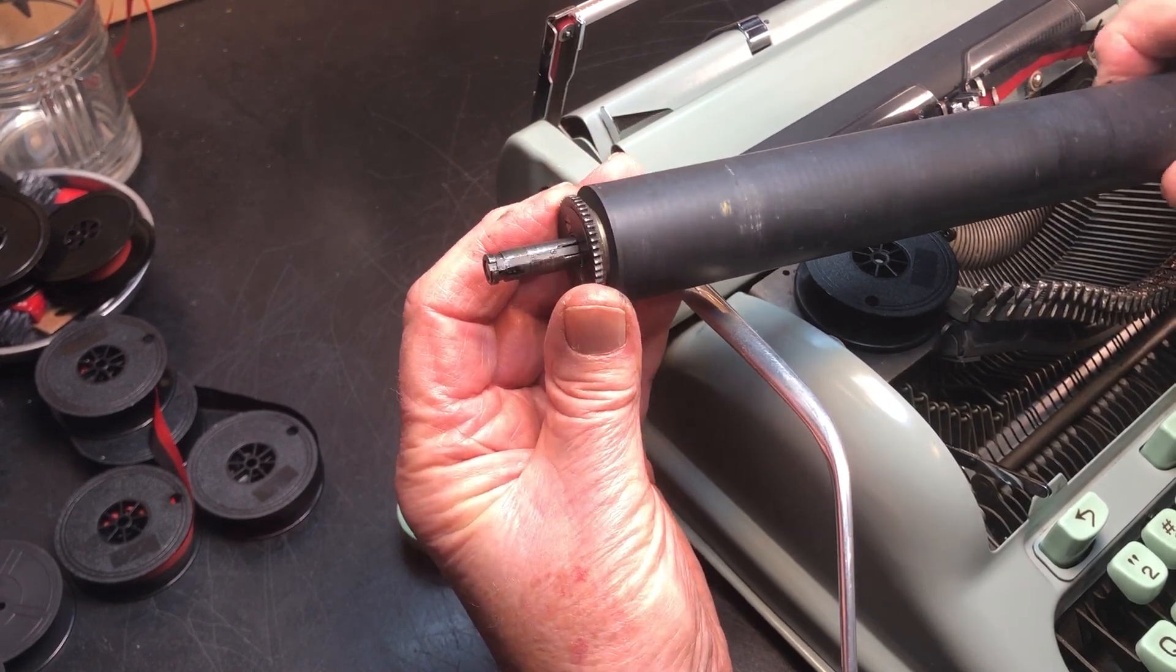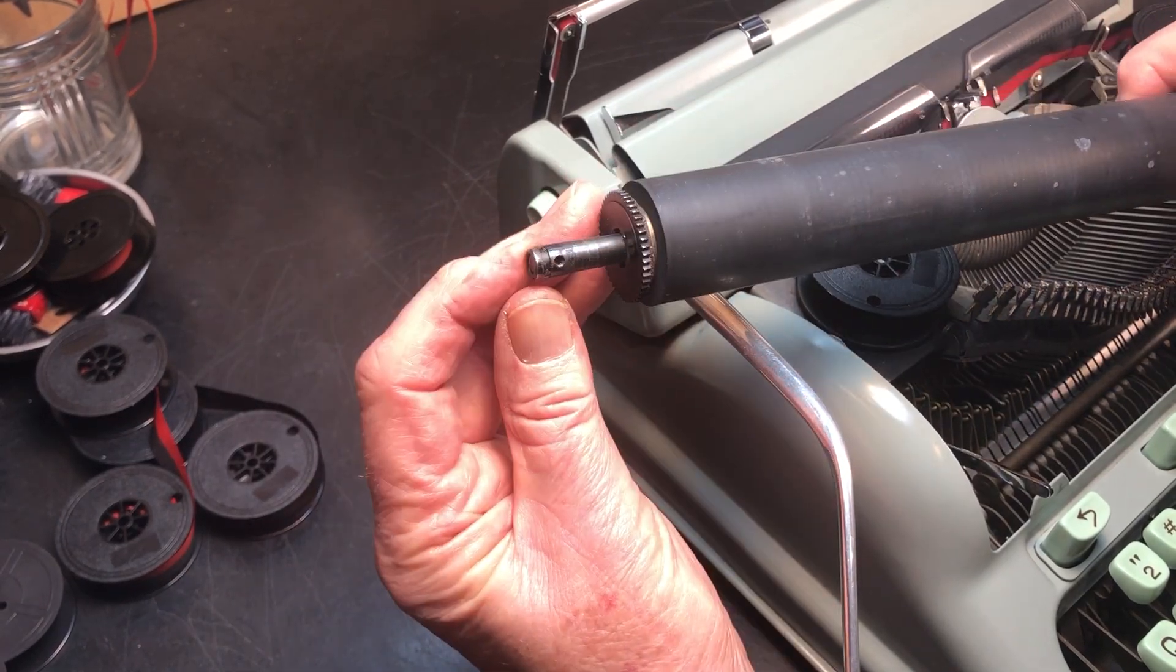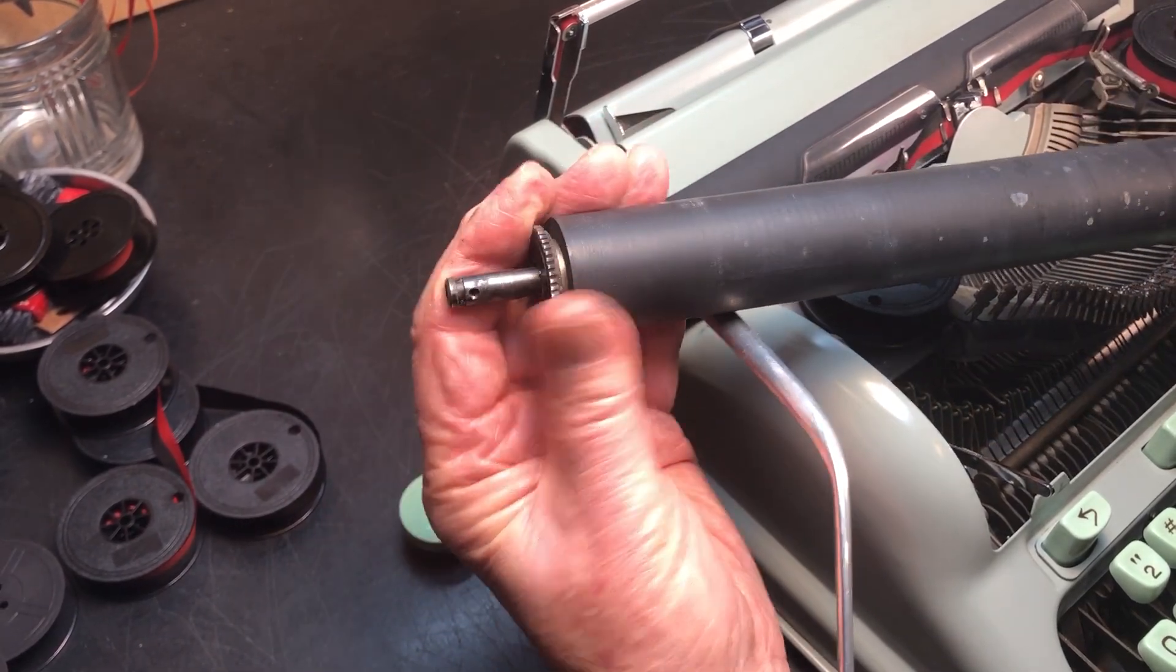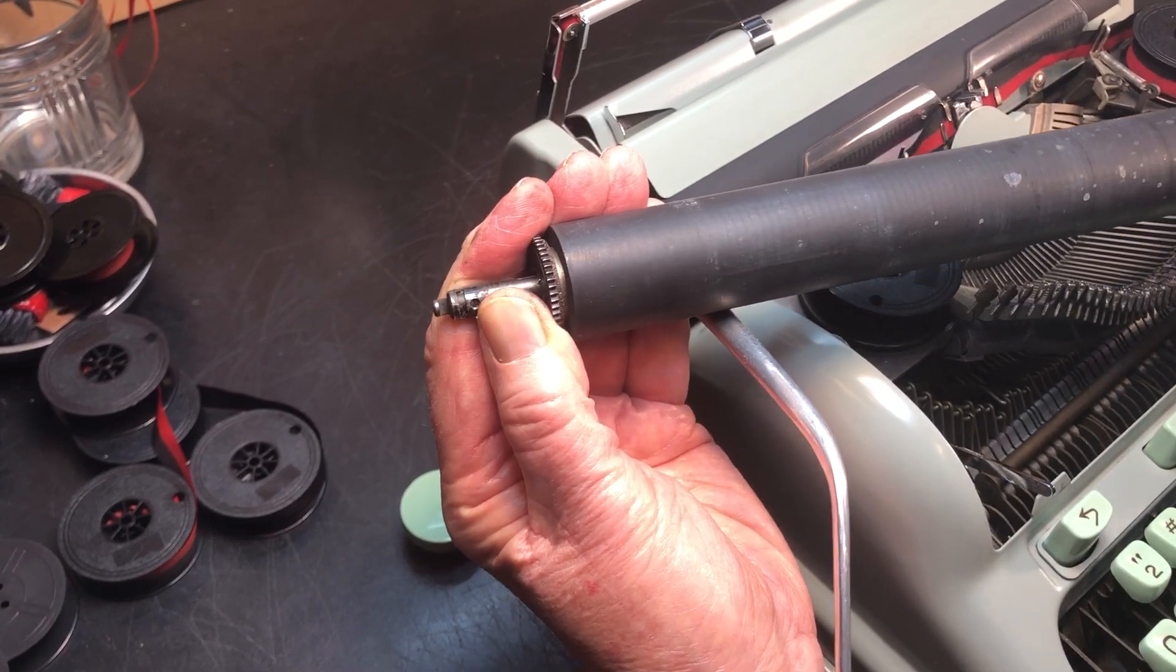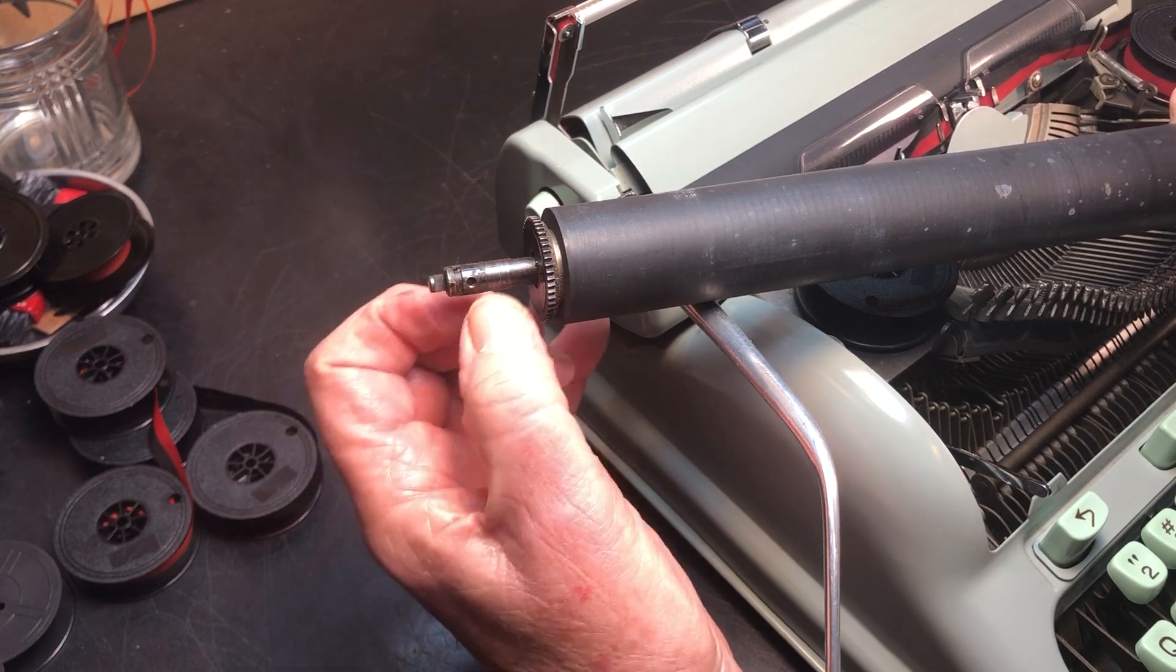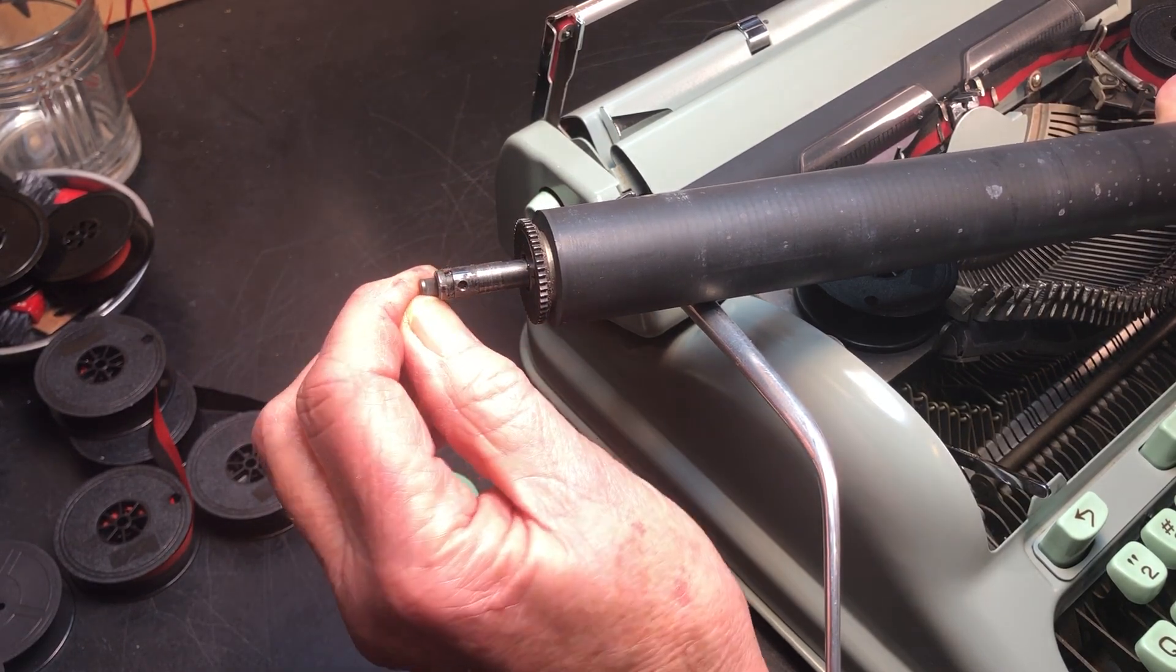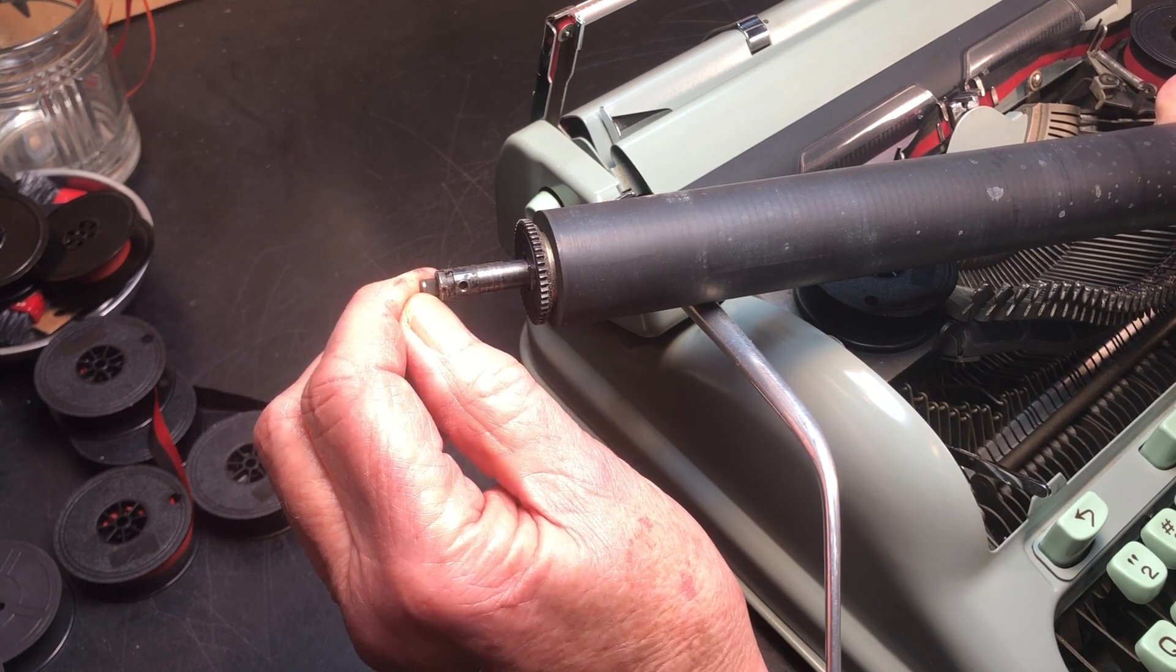But the screw goes in here, and it has to be lined up with this notch so that when you push the knob in and out, this screw moves this in and out. This is what limits it. That little nub limits the travel.